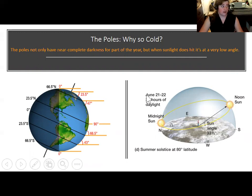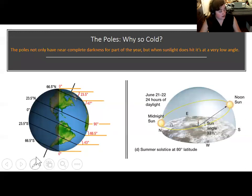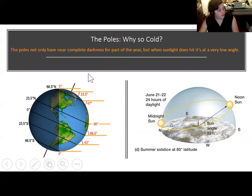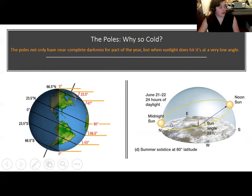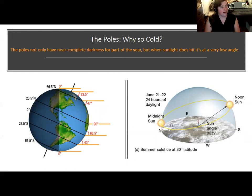Earth's axis is tilted, causing the Arctic to be in almost complete sunlight for part of the year, while at the same time the Antarctic is in near-complete darkness. It's still cold in the Arctic during summer because sunlight is glancing across the surface at the poles rather than hitting head-on as at the equator. At the pole, sunlight doesn't efficiently heat the air — people refer to the polar sun as if it's almost a different star.